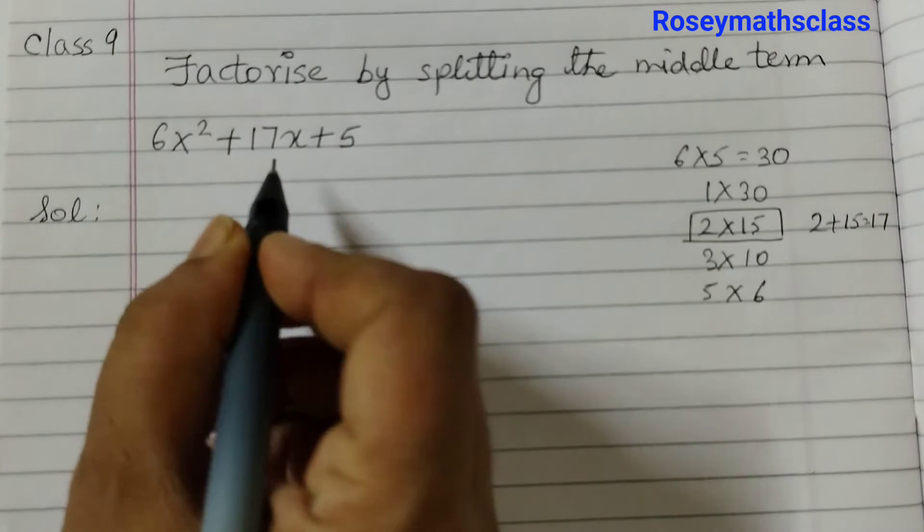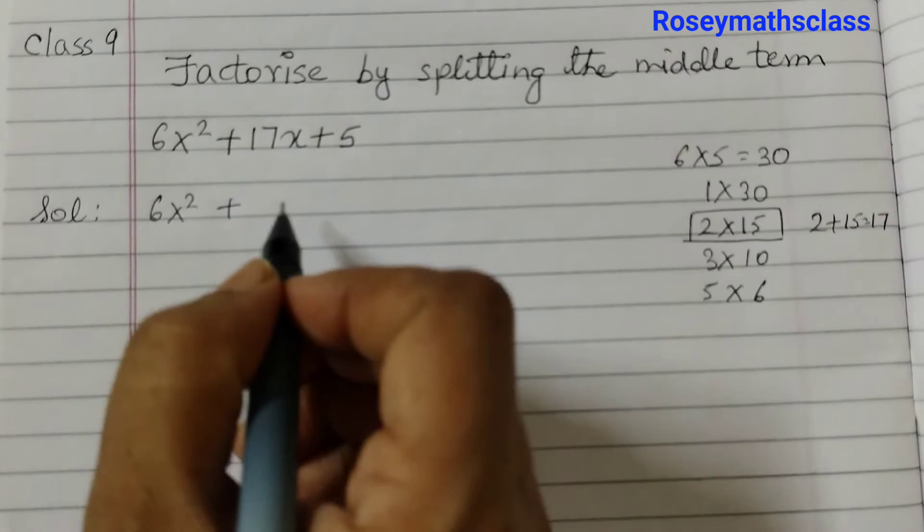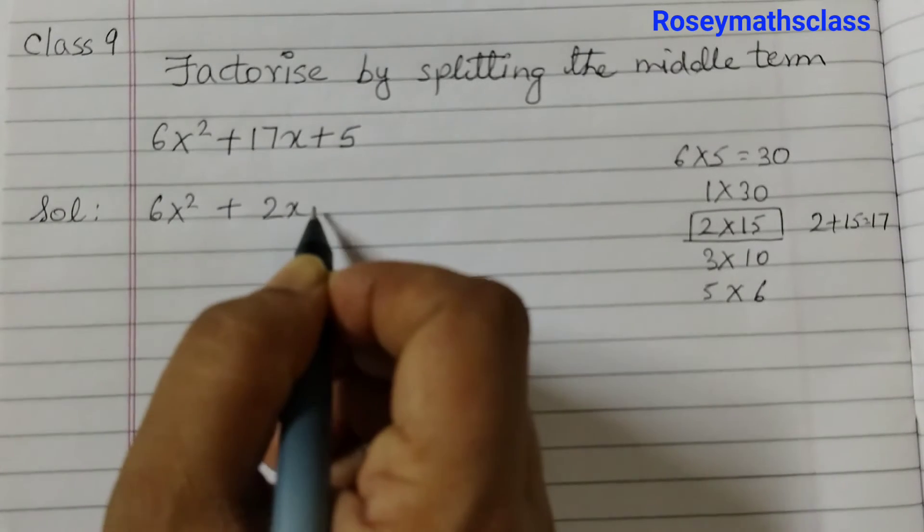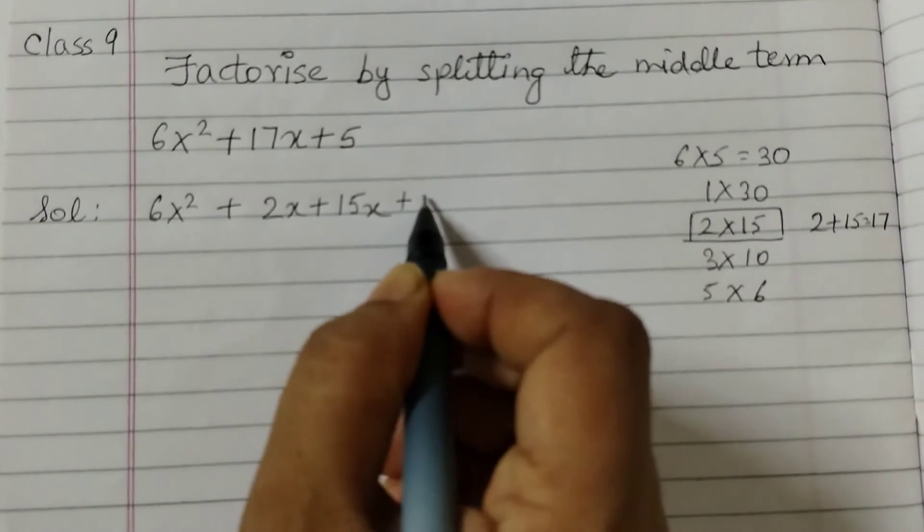Split the middle term. 6x squared plus 17 is 2x plus 15x. The last term remains as it is.